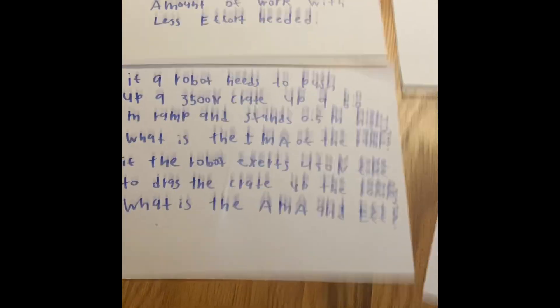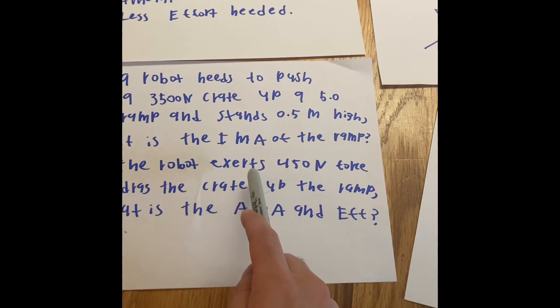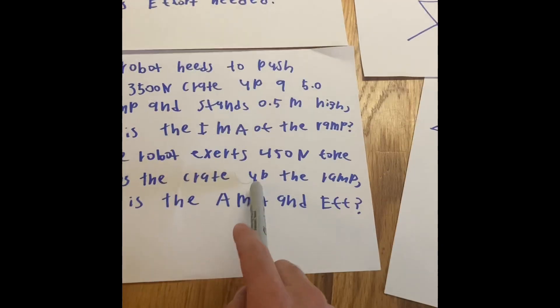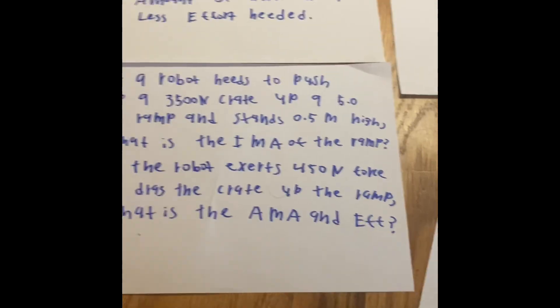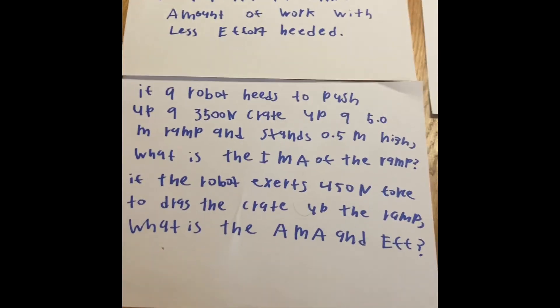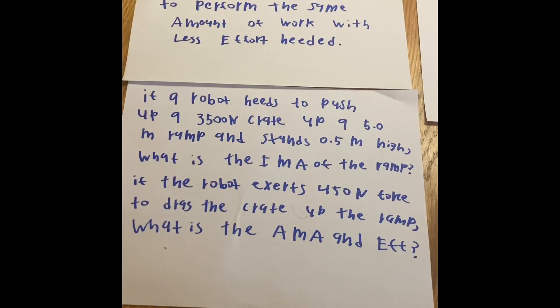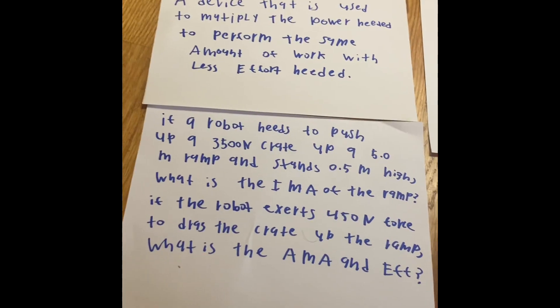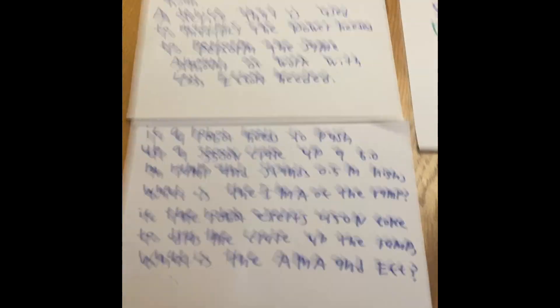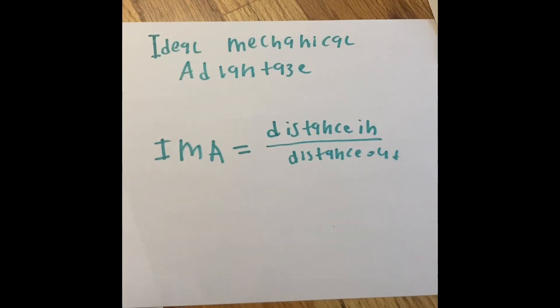So when the problem says, if the robot exerts 450 newtons of force to drag the crate up the ramp, what's its AMA and EFF, but hang on, what is the AMA? Okay, we already solved the IMA, which is the conceptual part, which is the ideal plan, what our machine wants to do. If we want to try doing the AMA, this is what's gonna happen.